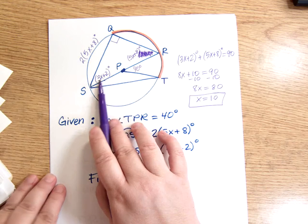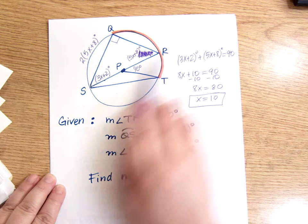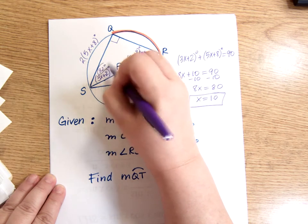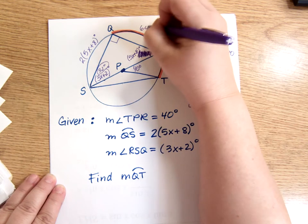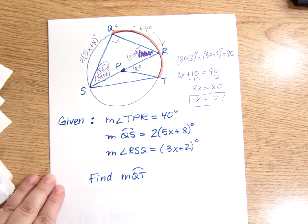This angle, QSR or RSQ, is 32 degrees. Which means this arc, QR, is twice that. 64 degrees.